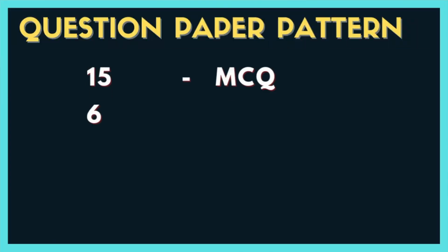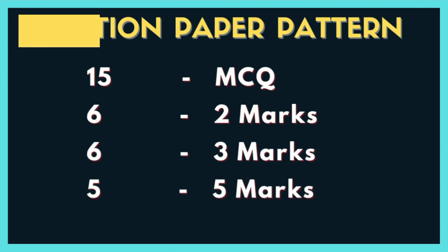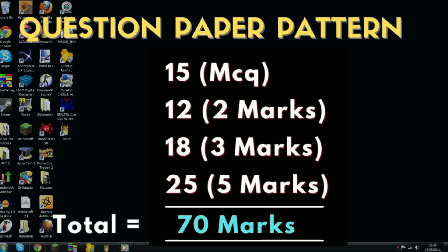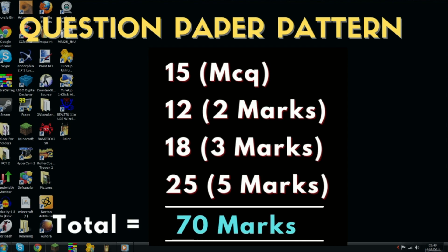Let us see what is the pattern of the question paper. You have to answer 15 objectives, 6 two-marks, 6 three-marks, and 5 five-marks — total comes to 70 marks. The remaining marks are allotted for practicals. In computer application, you are not overloaded during exam time, so you will have a lot of time to think and answer properly. Now let us take each component separately and see how we can get very good marks.